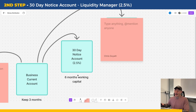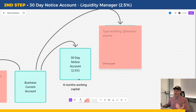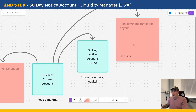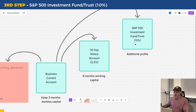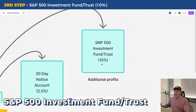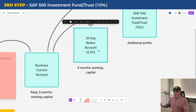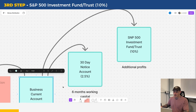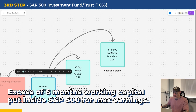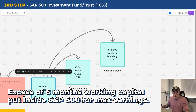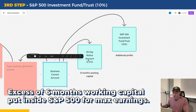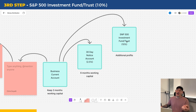Once you've got six months of working capital in the 30-day notice account and three months in the current account, any additional cash or profit on top of that should be making more money for you. So you want to set up an S&P 500 investment fund or trust fund, and all your additional profits can go straight into that. These are all held in the name of your business, so you're not pulling cash out and incurring tax.